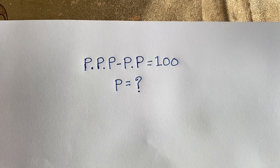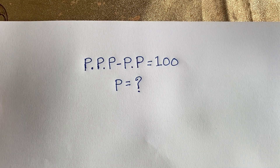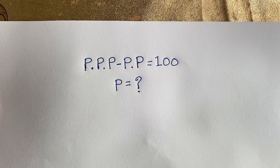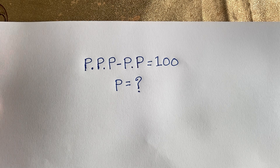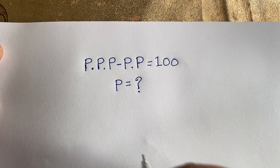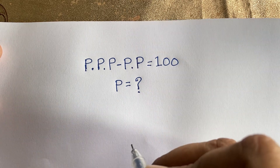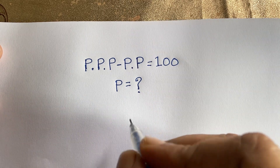Hello everyone. In this video, we have solved this interesting math question. P times P times P minus P times P is equal to 100. P is equal to what? How to solve this question? It is an interesting math Olympiad question.